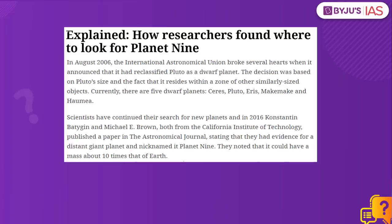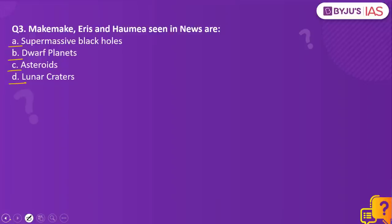This article in the Indian Express talks about planet 9 in our solar system, on which studies are still being carried out. It is estimated that planet 9 could have a mass about 10 times that of Earth. This article also mentions the five dwarf planets in our solar system. In 2006, Pluto was reclassified as a dwarf planet because it resided within a zone of other similarly sized objects. Currently there are five dwarf planets: Ceres, Pluto, Eris, Makemake and Haumea. So the right answer is Option B — dwarf planets.